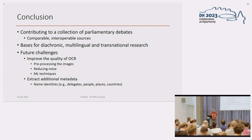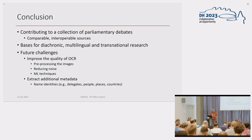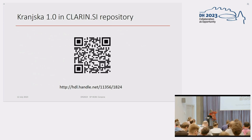What are the future challenges? We want to improve the quality of OCR, and extract some additional metadata, especially about the speakers — the delegates — and maybe also people, countries, places, and named entities. This is a good basis for diachronic, multilingual, transnational research that can be done upon this corpora. If you are interested, here is the URL where you can get the corpora and the QR code. Thank you.